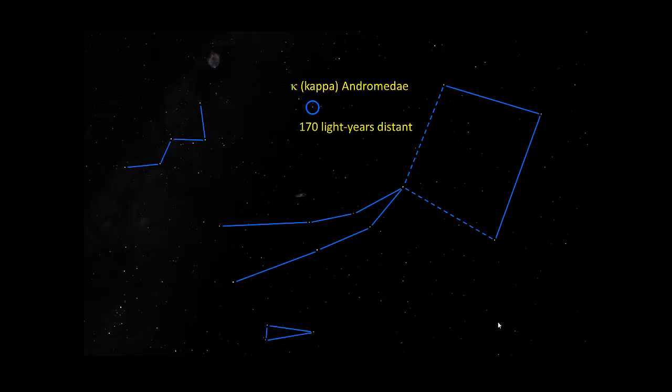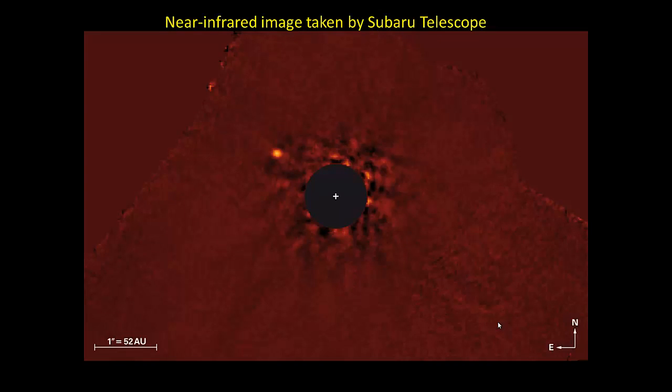There's Cassiopeia up there. Great square of Pegasus. Andromeda. Triangulum. In the circle up there is a star. It has Kappa Andromeda. Kappa is another Greek letter. And about 170 light years away. So not too far. But here's something interesting about that star.